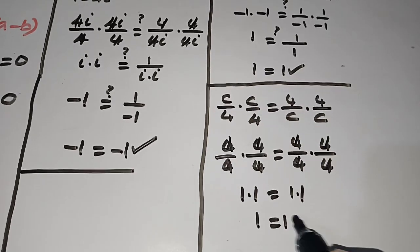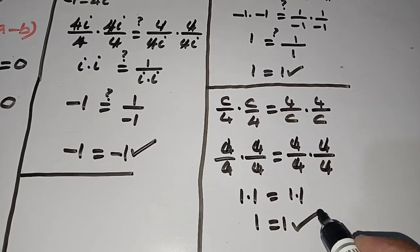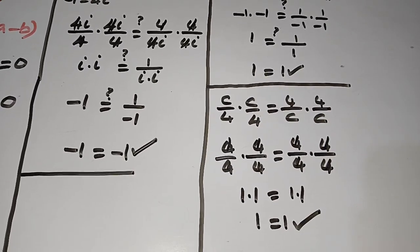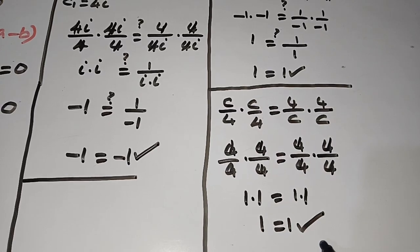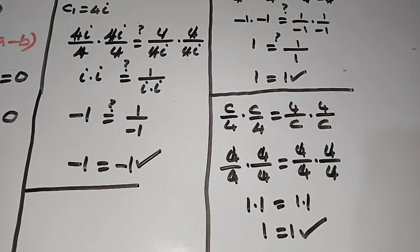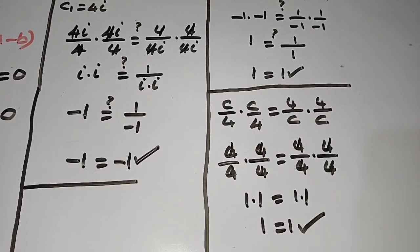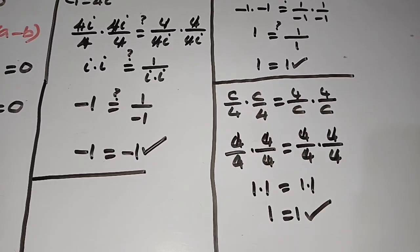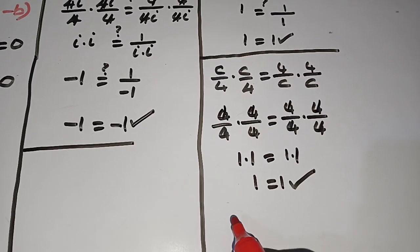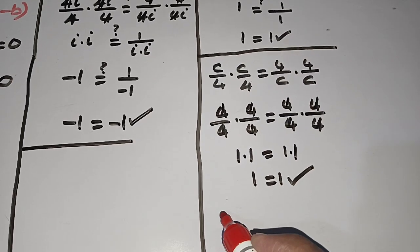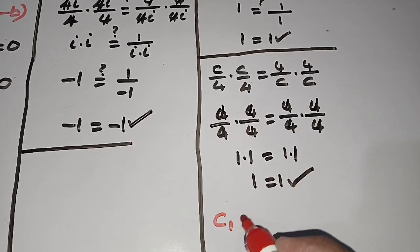So 1 = 1. The left hand side and right hand sides are equal. Therefore this also satisfies the given equation. So we have 4 solutions in total.